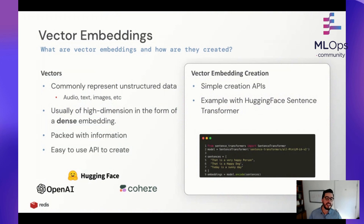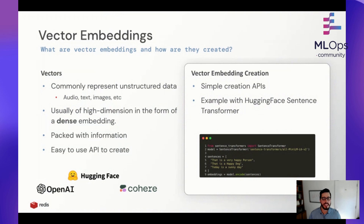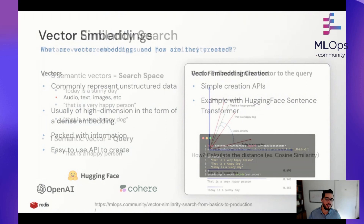These come out of machine learning models, which you've probably heard all about today from OpenAI, HuggingFace, and Cohere. It's become incredibly easy to use these APIs and actually extract embeddings from them.